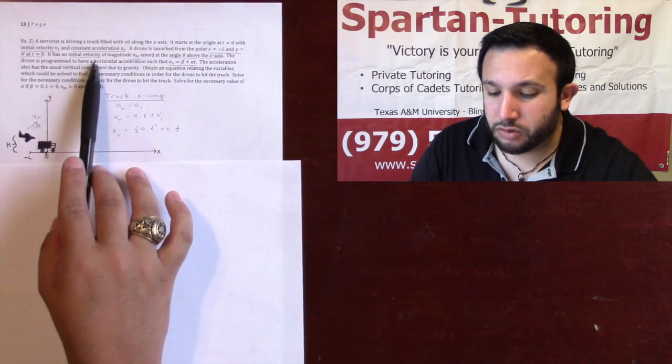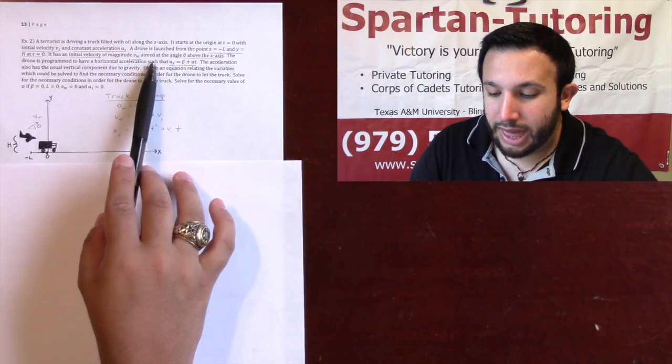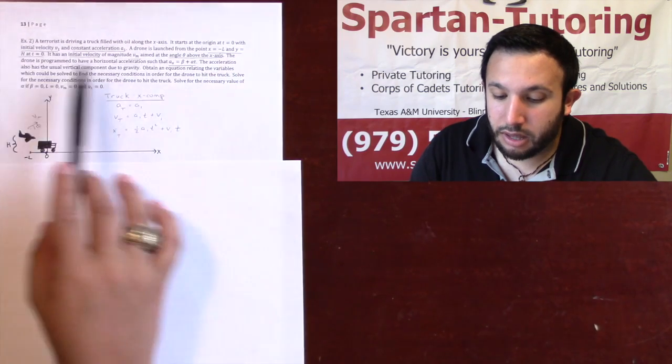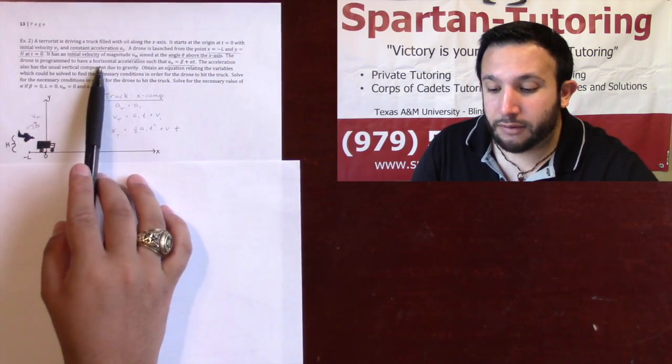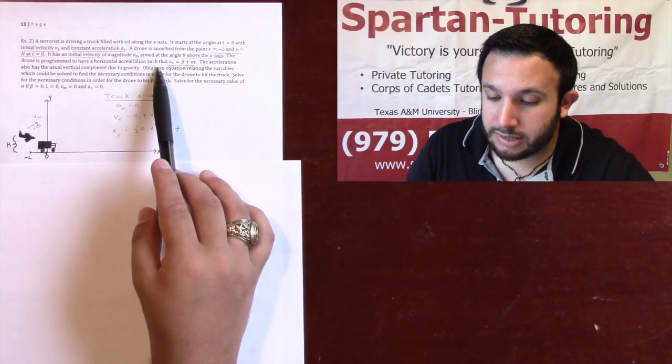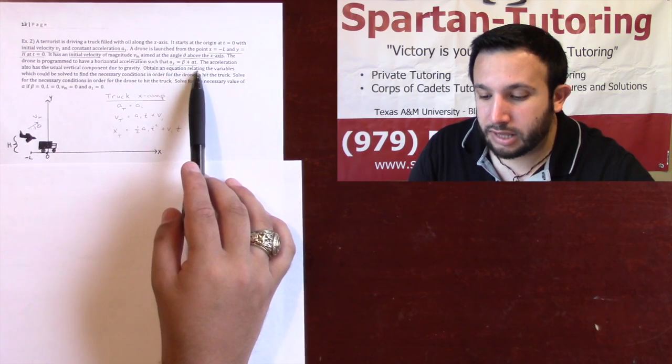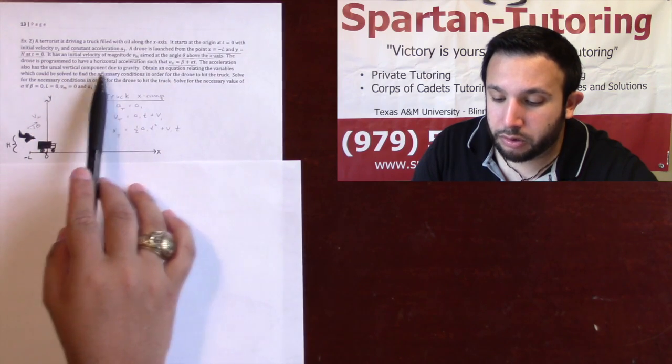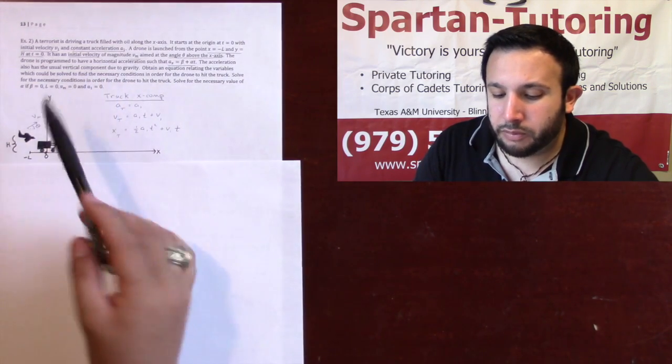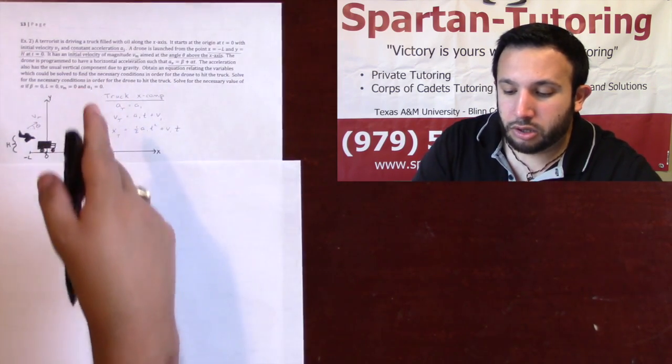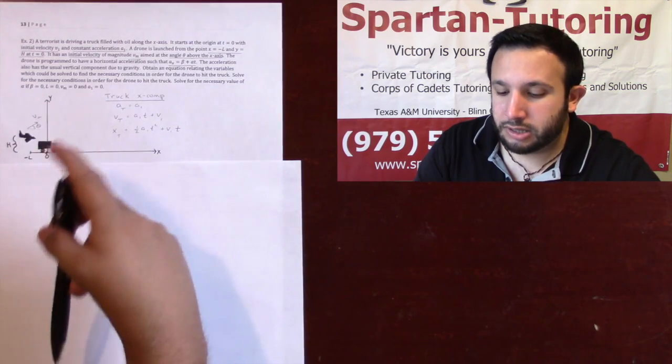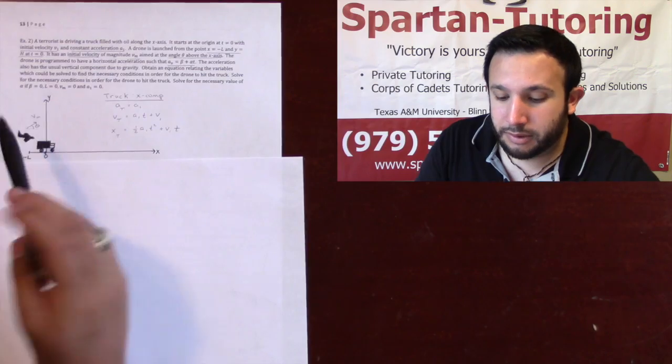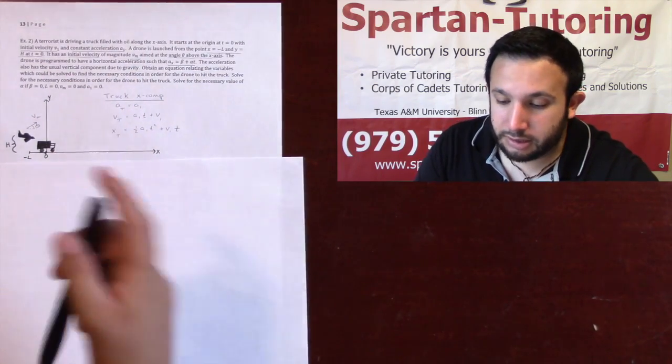A drone is launched from the point x equals negative l and y equals h at t equals zero. It has an initial velocity with a magnitude vm aimed at an angle theta above the x-axis. The drone is programmed to have a horizontal acceleration such that ax is beta plus alpha t. The acceleration also has a usual vertical component due to gravity, so ay will be negative g because it's pointed down.